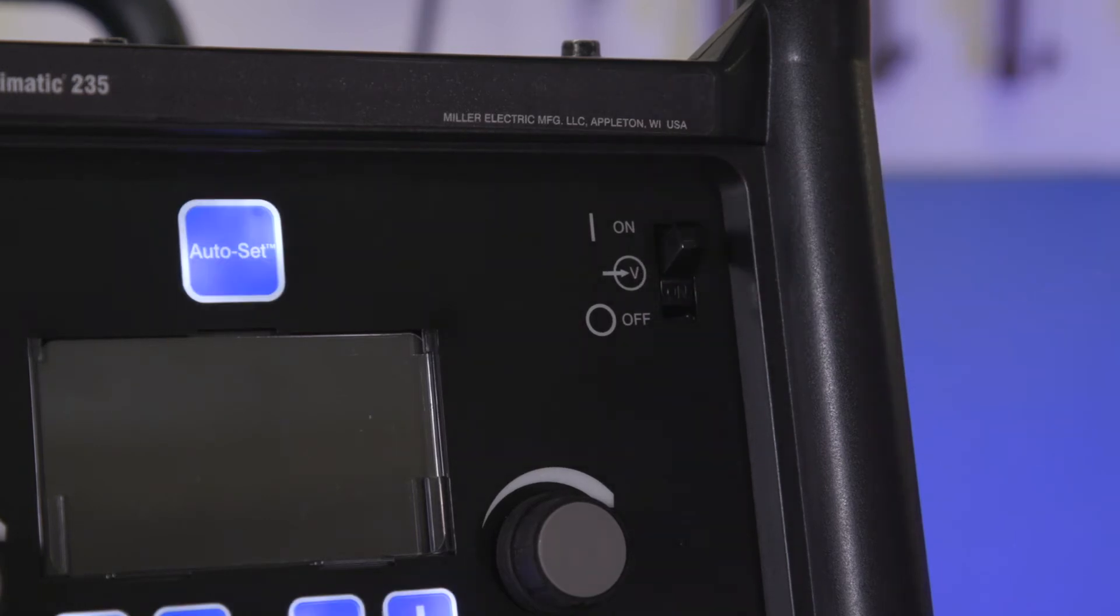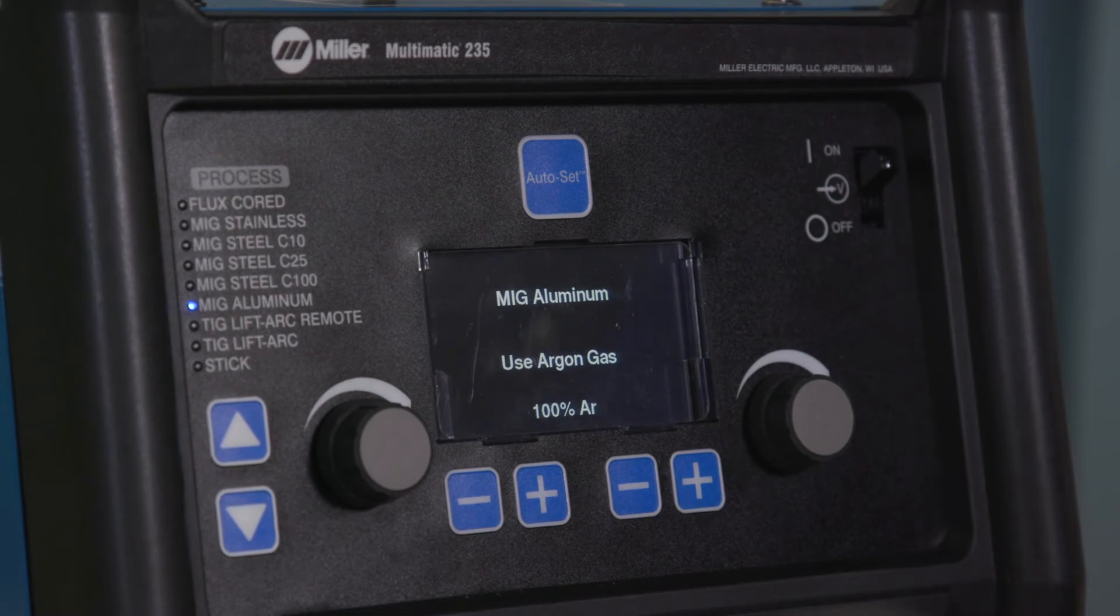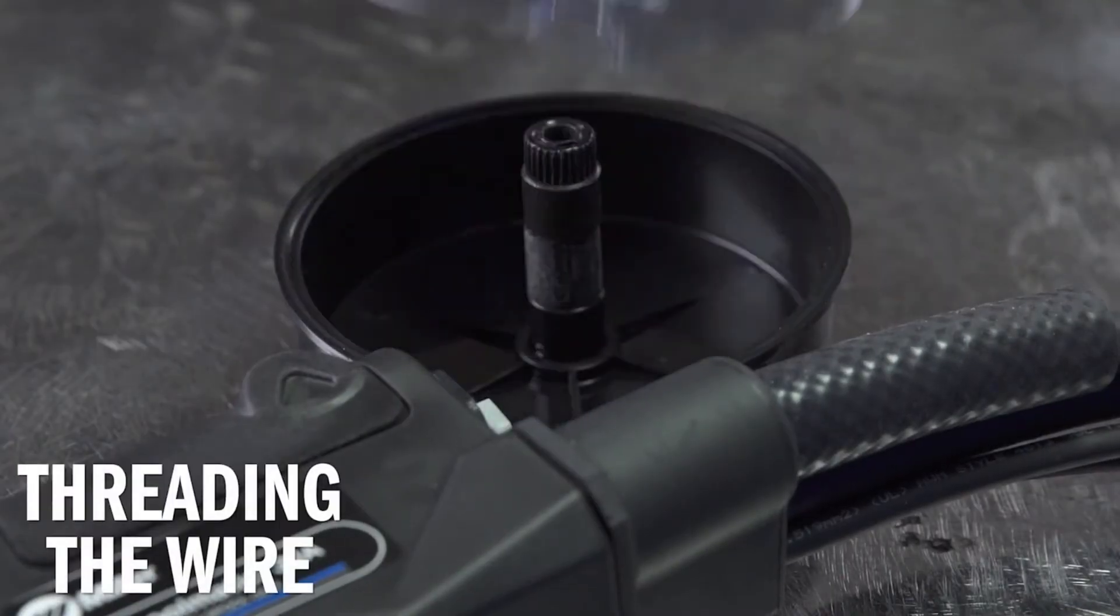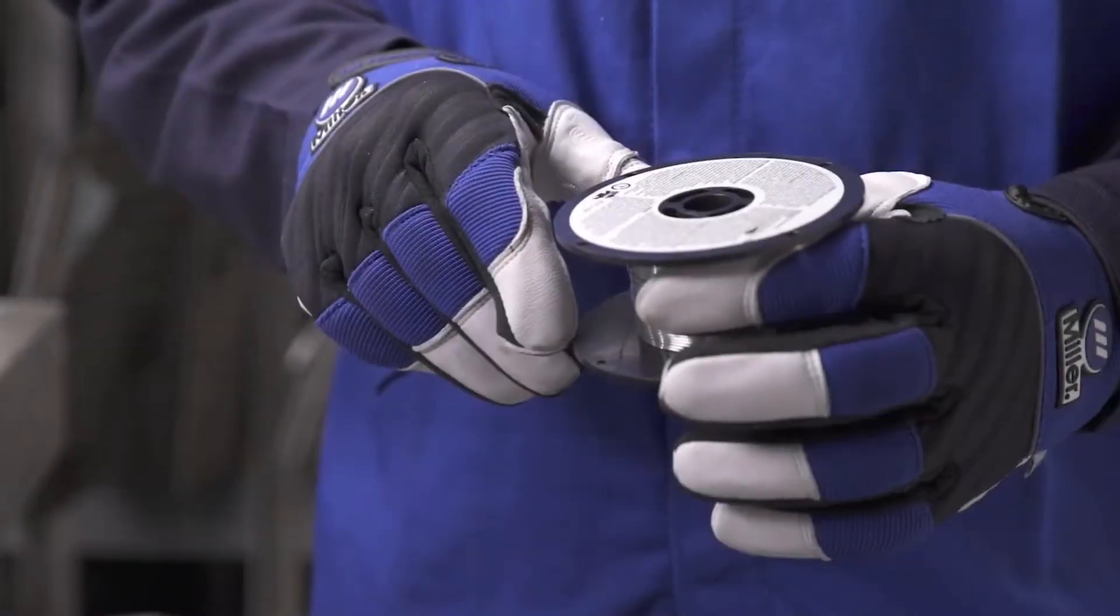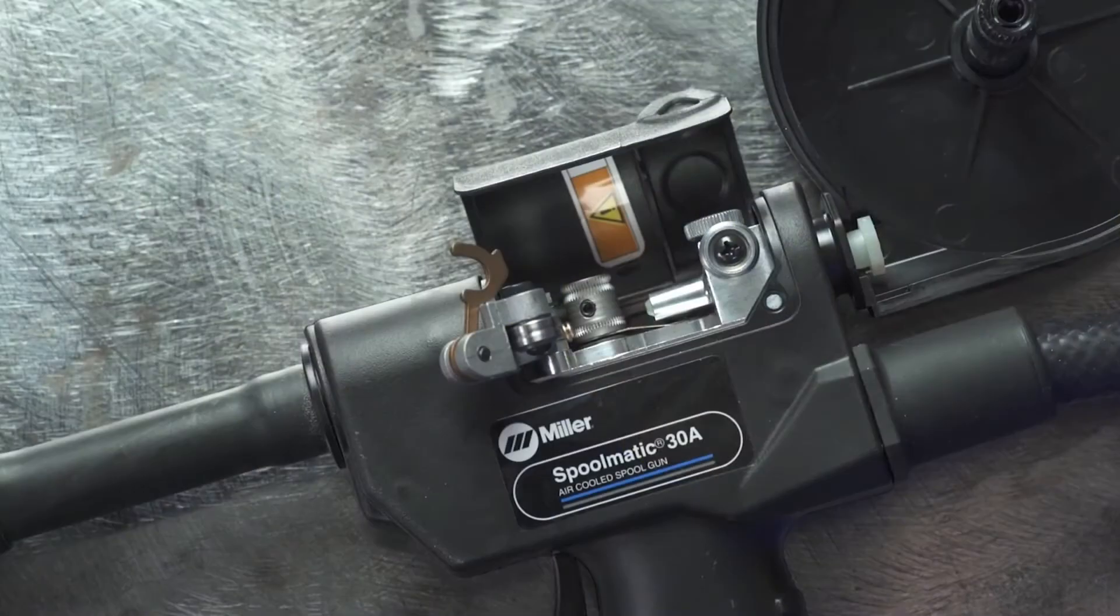Turn the machine on and select MIG aluminum. Now thread the wire. Open the cover of the spool gun canister and remove the nozzle. Unspool 8 to 12 inches of wire. Snip and straighten the wire.